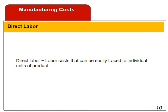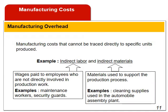Direct labor refers to labor costs that can be easily traced to individual units of product. Manufacturing overhead consists of all manufacturing costs other than direct materials and direct labor. These costs cannot be easily and conveniently traced to products. They are also called indirect manufacturing costs, factory overhead costs, or factory burden. Examples include salaries for supervisors, janitors, and security guards, factory facility charges, etc.